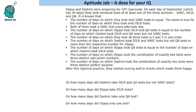This is a set based on Venn diagrams. Vijay and Dashmi are two friends who were preparing for CAT rigorously. On each day of September, which has 30 days, they took a sectional test of at least one of the three sections: VARC, DILR, and QA. Some facts are given to us about that.